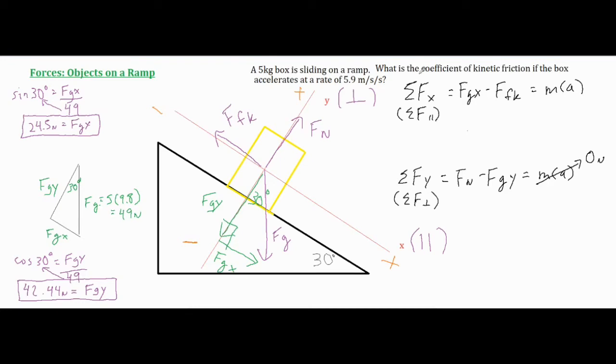It looks like we want the coefficient of kinetic friction as our final answer that we are looking for. So I'm definitely going to have to use the formula, the force of friction equals mu fn, which is the coefficient of kinetic friction times the normal force. I'm going to go ahead and plug in my numbers and see what I come up with from there.